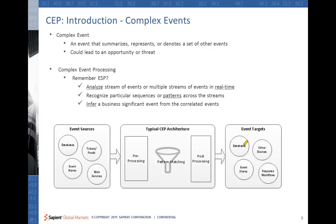The following figure shows a typical CEP architecture or a CEP application. On the left side, we have the event sources responsible for sending the events. The sources could be pushing the events — like tickers, which really push the events — whereas from databases you would be pulling the events. Once the event reaches the preprocessing stage, some amount of preprocessing is applied before it is handed over to the next level of pattern matching as part of the CEP engine.